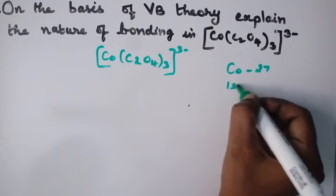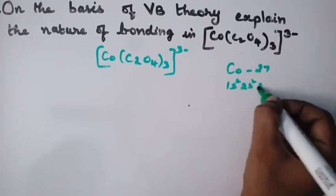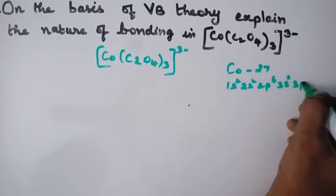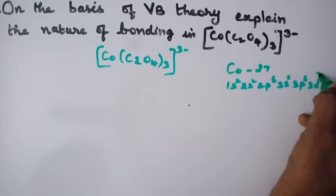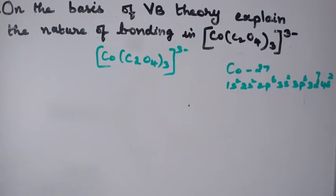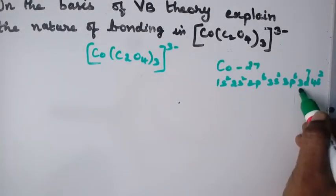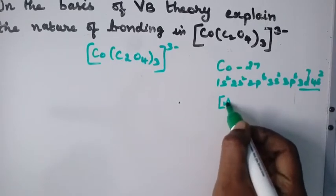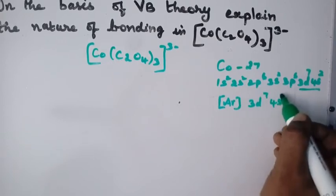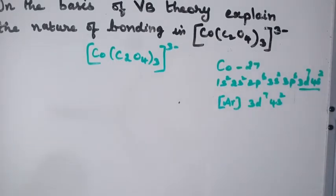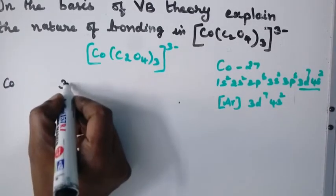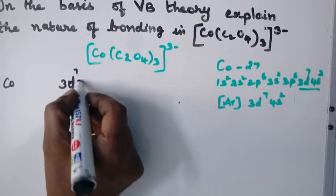The electronic configuration of cobalt is 1s² 2s² 2p⁶ 3s² 3p⁶ 3d⁷ 4s². The outer electronic configuration is 3d⁷ 4s², which can be written as [Ar] 3d⁷ 4s². This is for cobalt in the ground state.